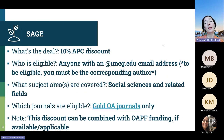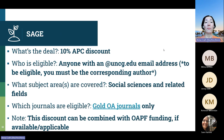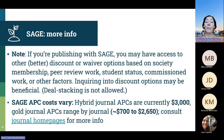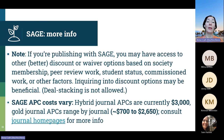SAGE is another publisher we work with. We have a 10% APC discount with them. That's not a lot, but it is something. Anyone with a UNCG email address is eligible, and you need to be the corresponding author. Their subject coverage is primarily social sciences and some related fields. This applies only to their gold open access journals and can be combined with OAPF money. If you're publishing with them, you may have access to better discounts based on society membership, peer review work, student status, or commissioned work. Unfortunately, they do not allow deal stacking — you can't combine a peer review discount with our 10% discount. You would just take whatever the better discount is. Their hybrid journal APCs are about $3,000; their gold APCs are lower.